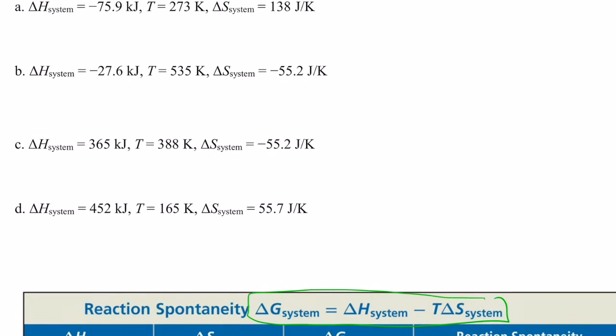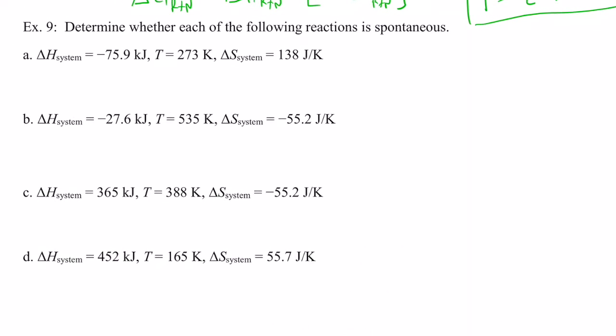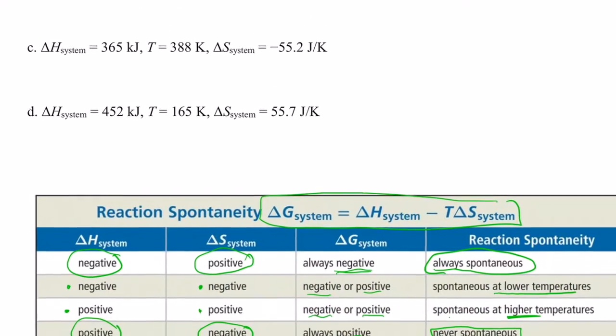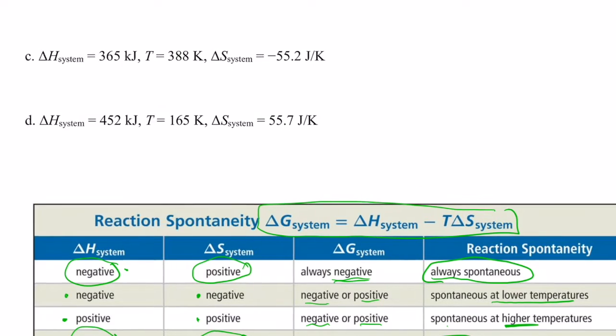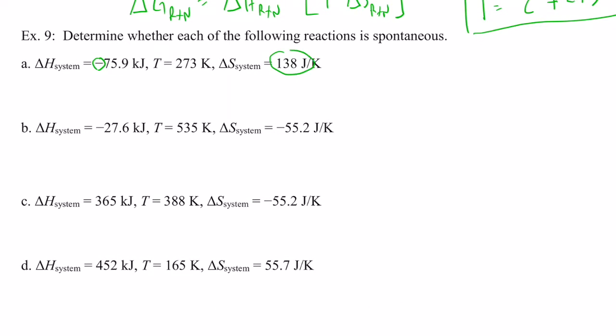Let's take a look at these examples. Are there any where we know for certain the sign of delta G? Let's look at letter A. Delta H is negative — nature prefers that. And delta S is positive — nature prefers that. So we know that delta G in this particular situation will be negative, and that reaction is going to be spontaneous regardless of what the temperature is. We'll do the math for that in just a minute.